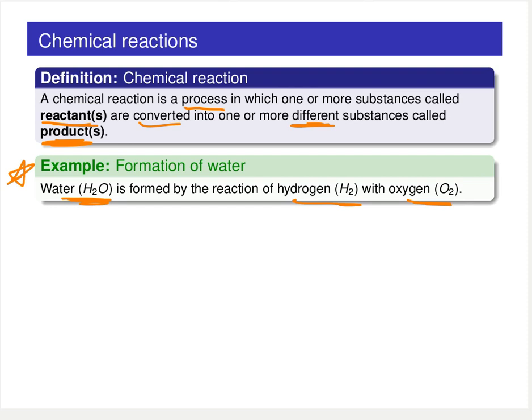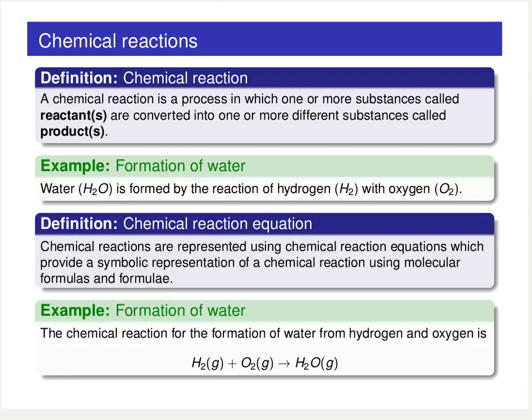Now it turns out that it's convenient to represent these chemical reactions using a symbolic form. And we call this symbolic representation of a chemical reaction a chemical reaction equation. The idea behind a chemical reaction equation is we simply use the molecular formula to provide a shorthand representation for both the reactants and products.